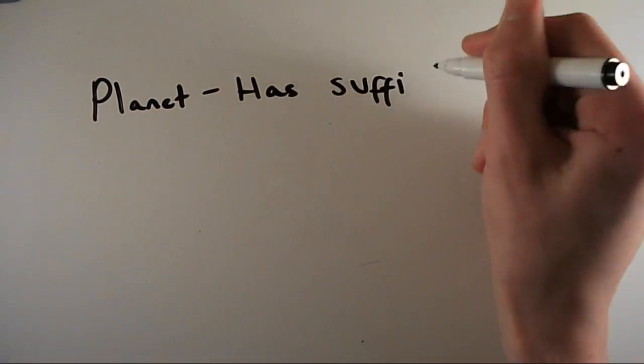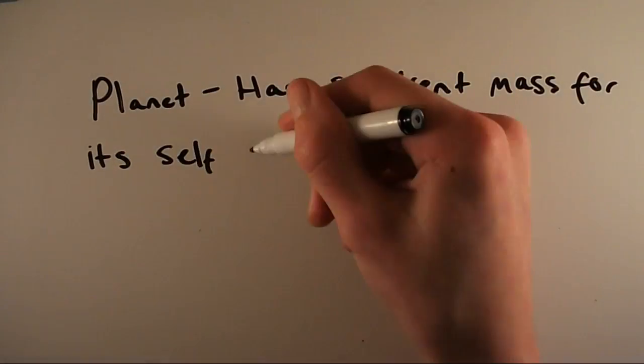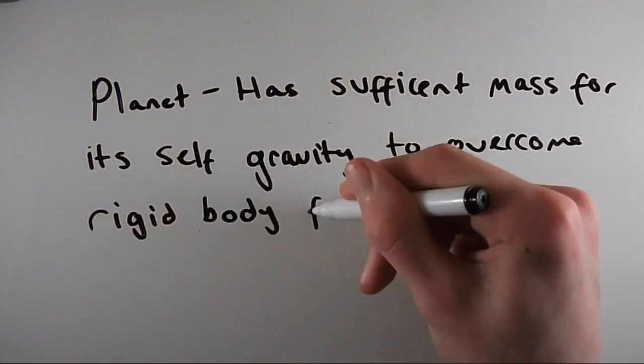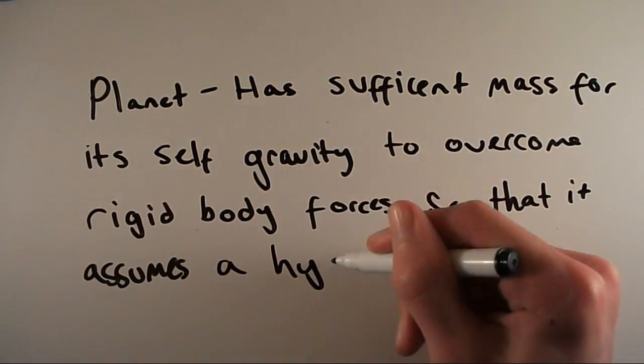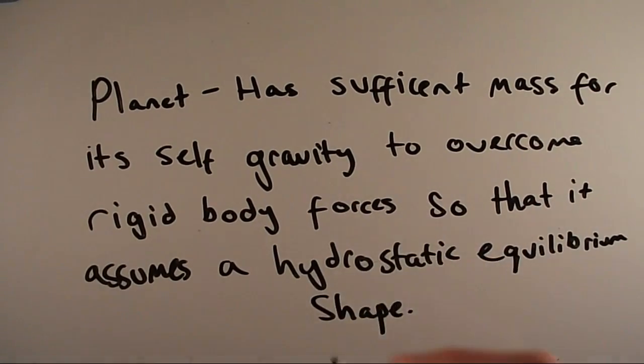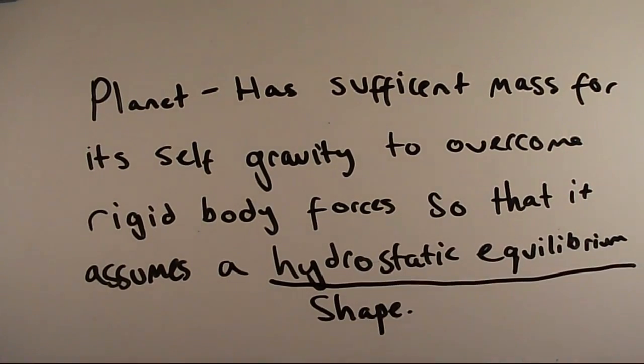Well firstly, the definition of a planet is something that has sufficient mass for its self-gravity to overcome rigid body forces so that it assumes a hydrostatic equilibrium shape, which basically means it needs to be nearly round for it to be a planet.